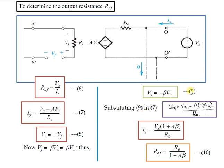Substituting equation number 9 into equation number 7: Ix = (Vx − A·(−beta·Vx)) / R0 = Vx·(1 + A·beta) / R0. Since ROF = Vx / Ix, rearranging gives ROF = R0 / (1 + A·beta), denoted as equation number 10.